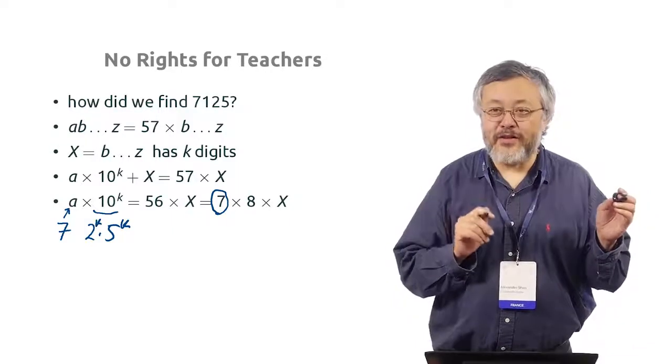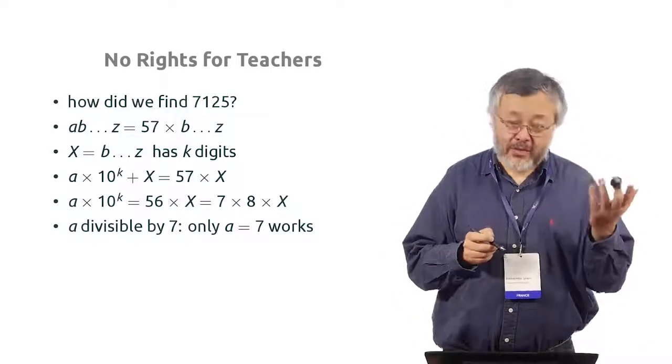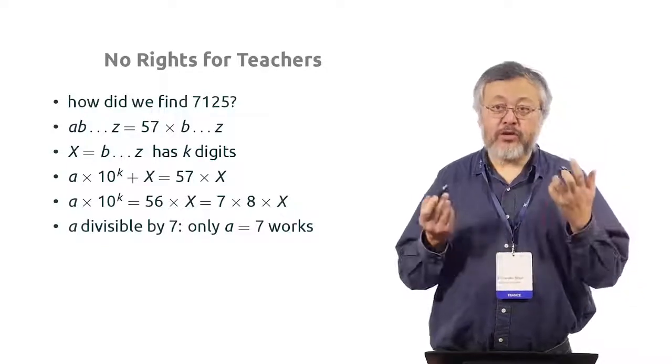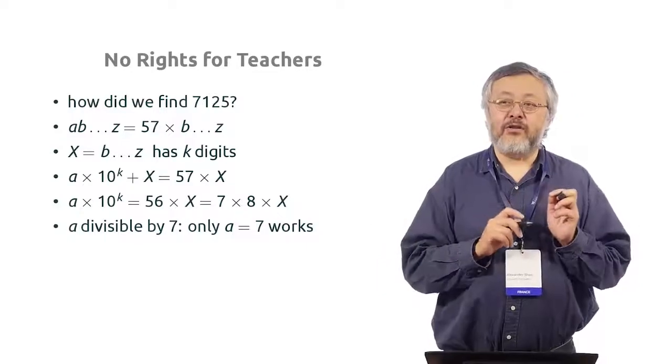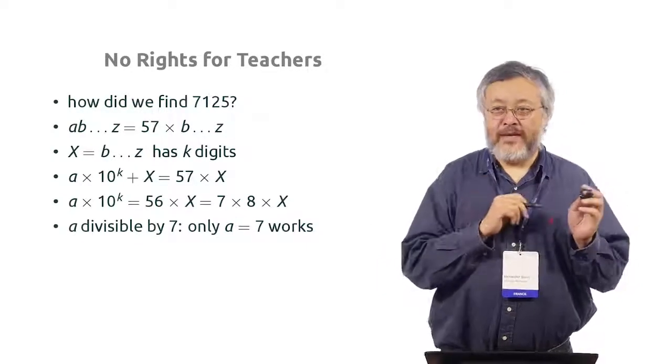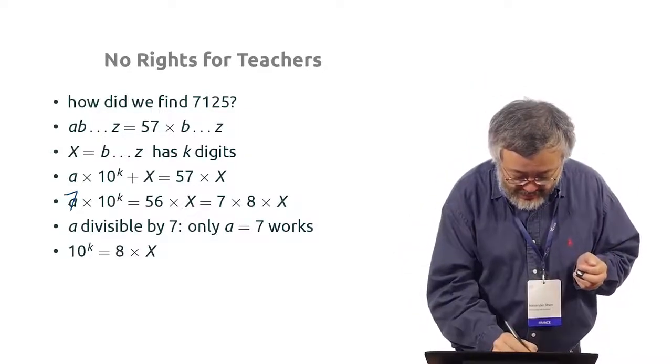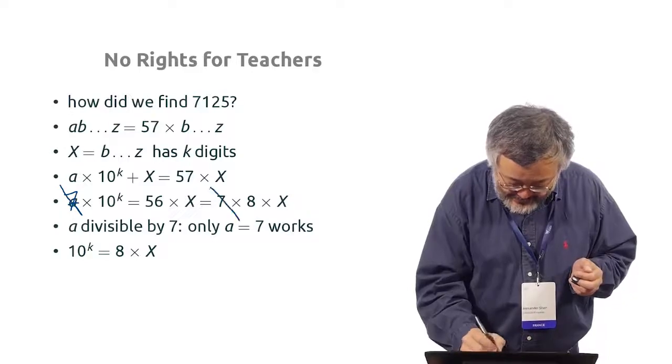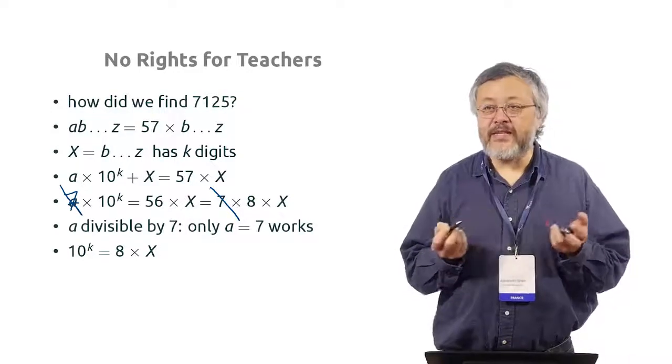A should be divisible by 7 as our first. It should contain 7 as a factor. And only a is only 7. Only one case. So we know a now. And then, if we know that this is 7, we can cancel the 7. And then, we know that 10 to the k is 8 times x.